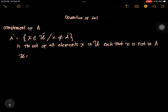Let's have an example. If the universal set is {2, 4, 6, 8, 10} and you have set A = {4, 6}, what is A complement?